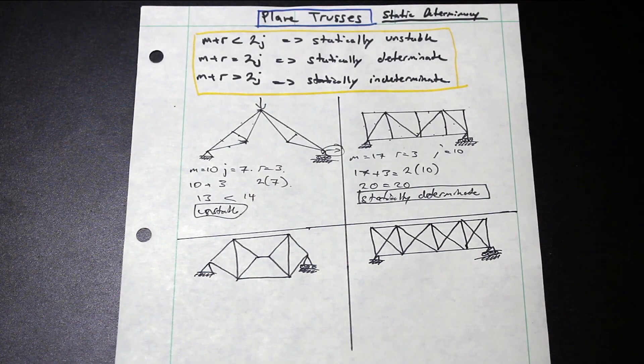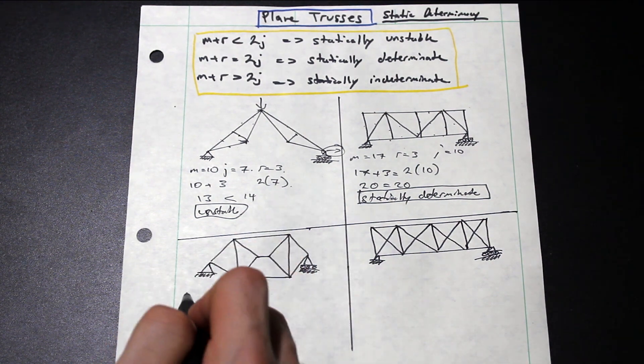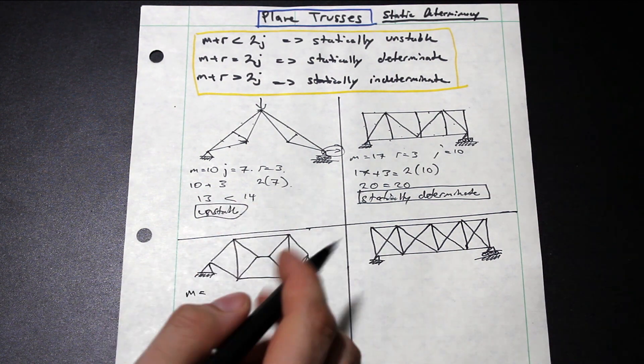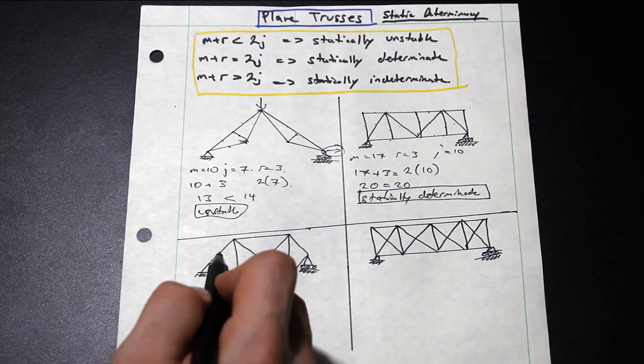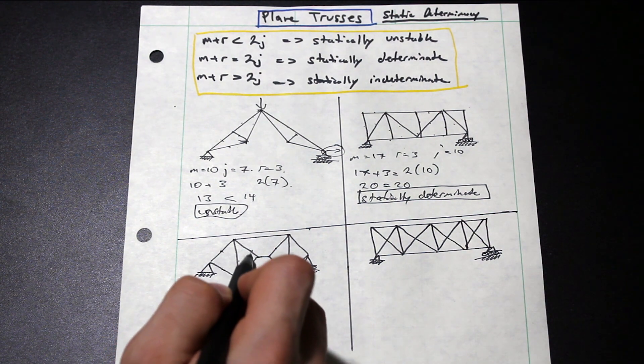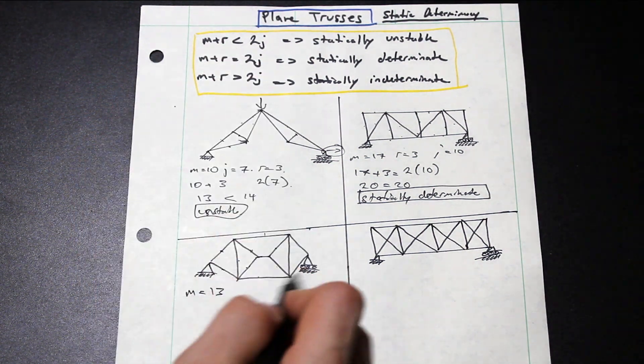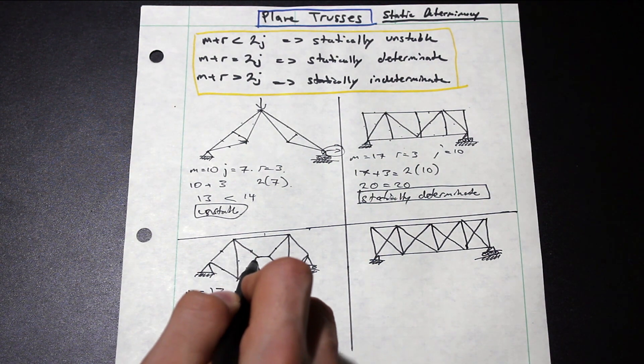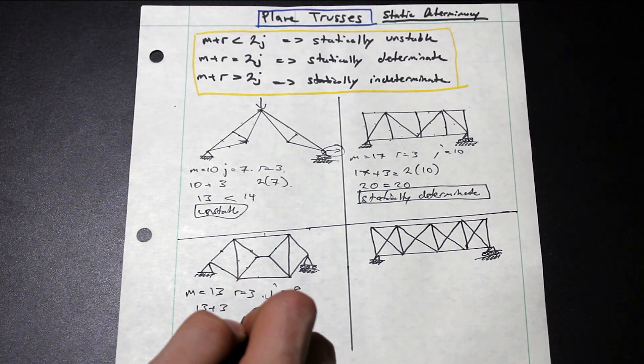So let's go on to the third question here. So let's count the number of members first. So let's start with M, and this is a little bit of a trick question, but let's check the stability first and then we'll go over it. So we have 1, 2, 3, 4, 5, 6, 7, 8, 9, 10, 11, 12, 13. Our R is 3 and our J is 1, 2, 3, 4, 5, 6, 7, 8.